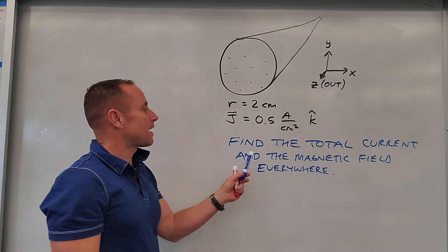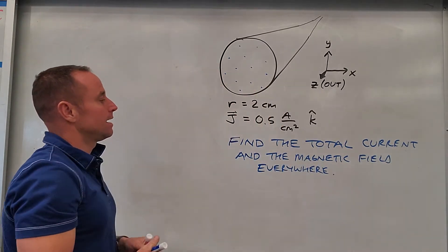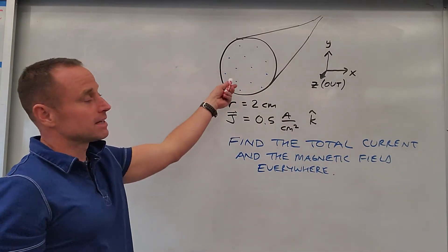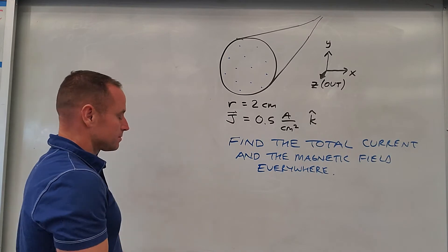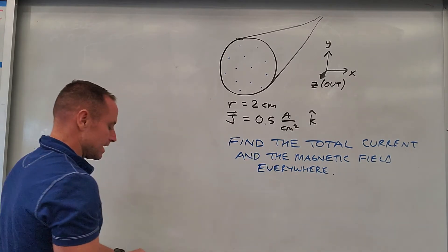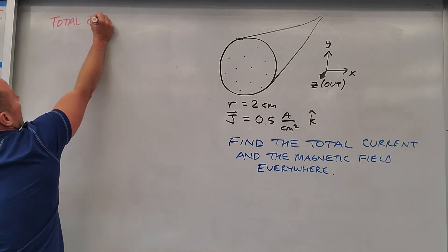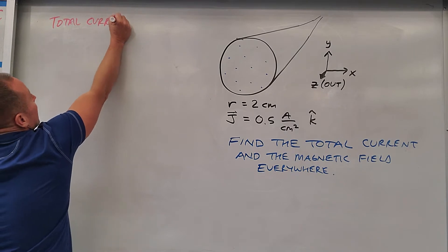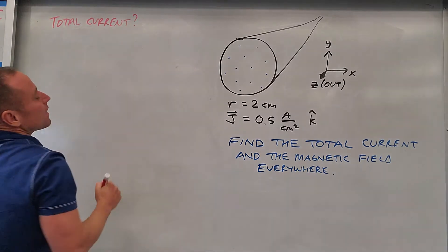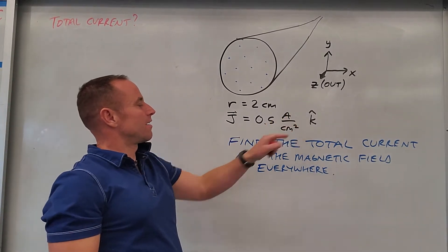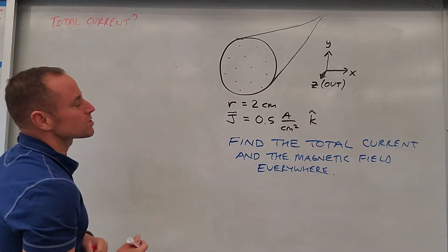What we're supposed to do is find the total current coming out of the wire and the magnetic field everywhere, meaning inside and outside the wire. So the first part is pretty easy - to get the total current. Let's do that part first. Total current.